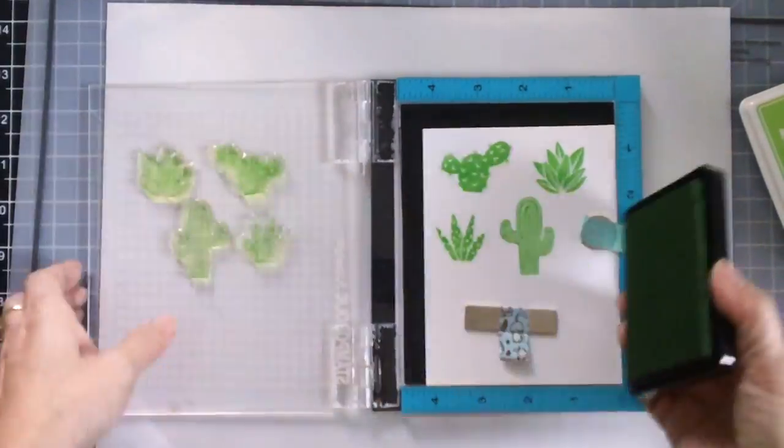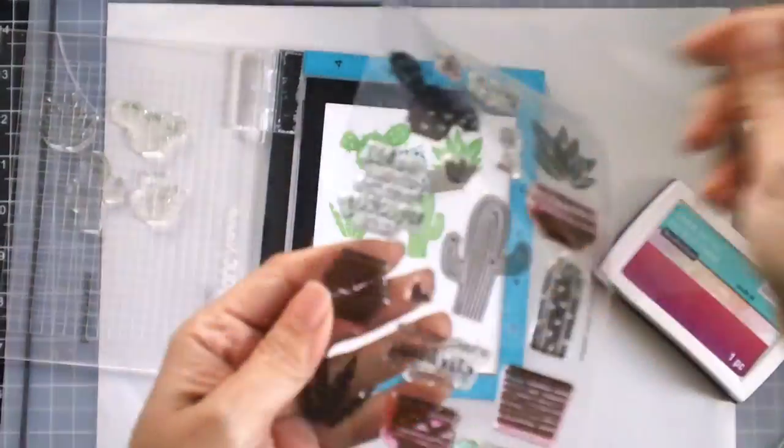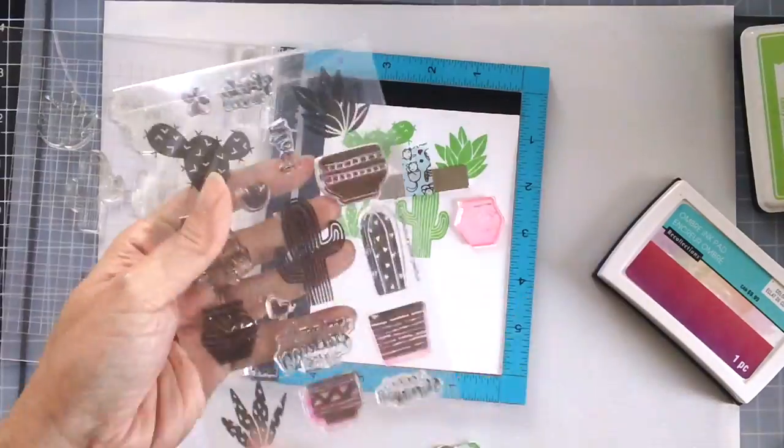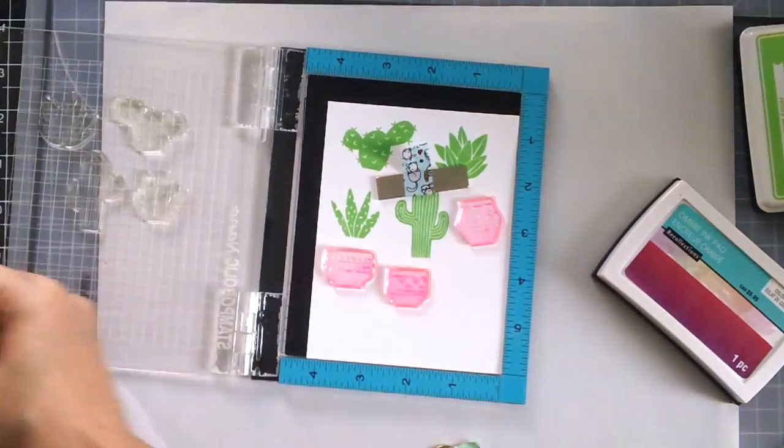I will also be using my stamping tool to stamp the pots, the decorative pots and I will be using a recollections ombre ink. Then I will be using the coordinating dies to die cut my images.